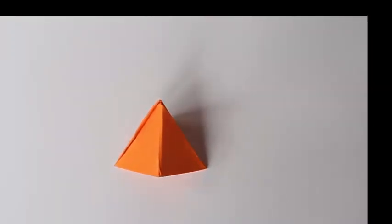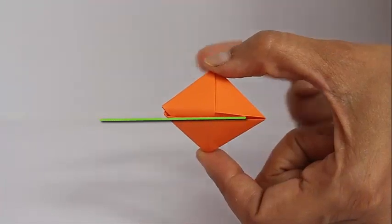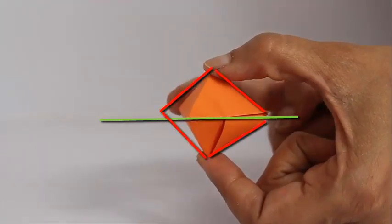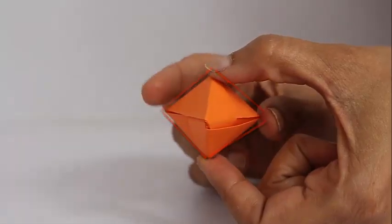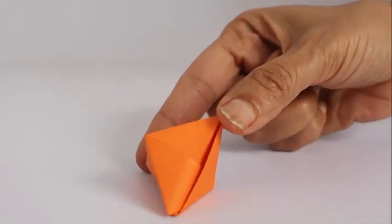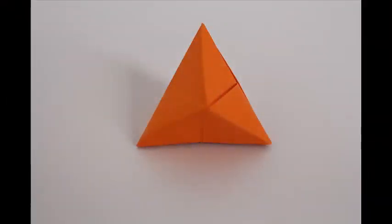This is the hexahedron, which is two triangular pyramids sitting back to back. The base of each triangular pyramid is an equilateral triangle, and the sides are right isosceles triangles. So enjoy folding this wonderful pyramidal structure hexahedron.